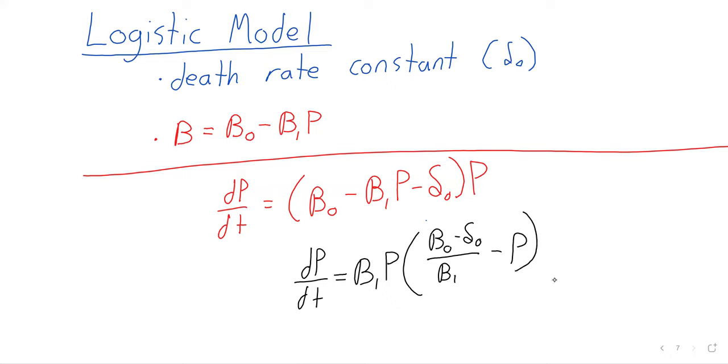And there are a few restrictions on these parameters. Beta one has to be positive. And that's just, I mean, look at this equation. The purpose of this equation was that as the population gets bigger, the birth rate gets smaller. If beta one were negative, it would have the opposite effect. If beta one were negative, the population getting bigger would make the birth rate bigger.